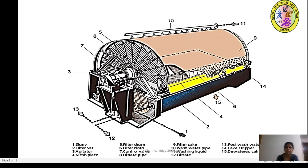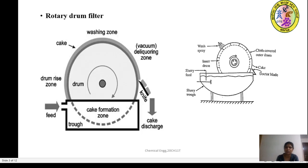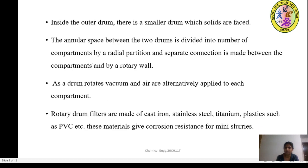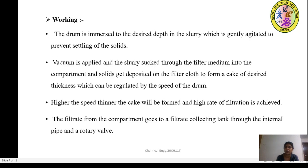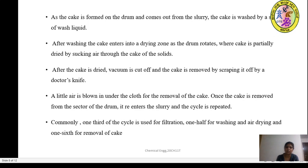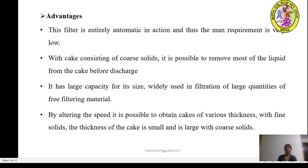The working mechanism involves the slurry being fed and passing from the inner wall of the drum to the outer wall where you have the filter cloth. The solids are deposited on the top of the filter cloth during filtration.